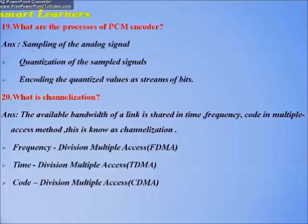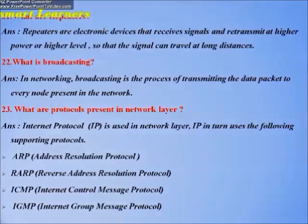What is channelization? The available bandwidth of a link is shared in time, frequency, or code in multiple access methods — this is known as channelization. The types are: frequency division multiple access (FDMA), time division multiple access (TDMA), and code division multiple access (CDMA).